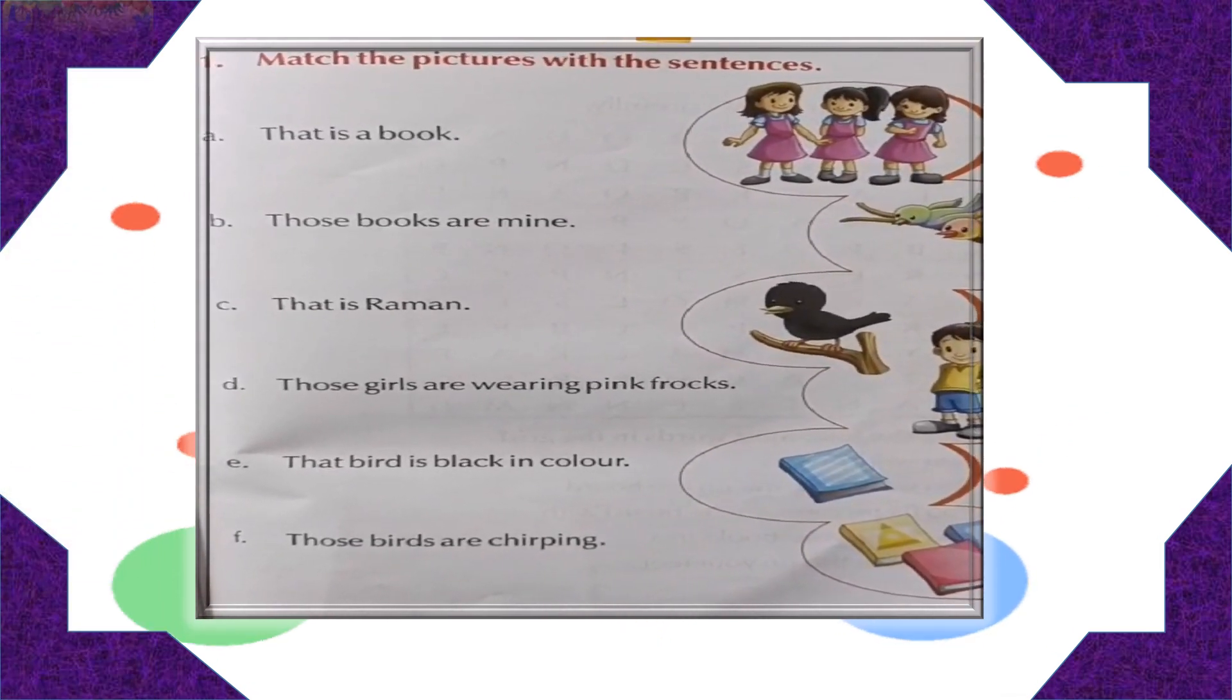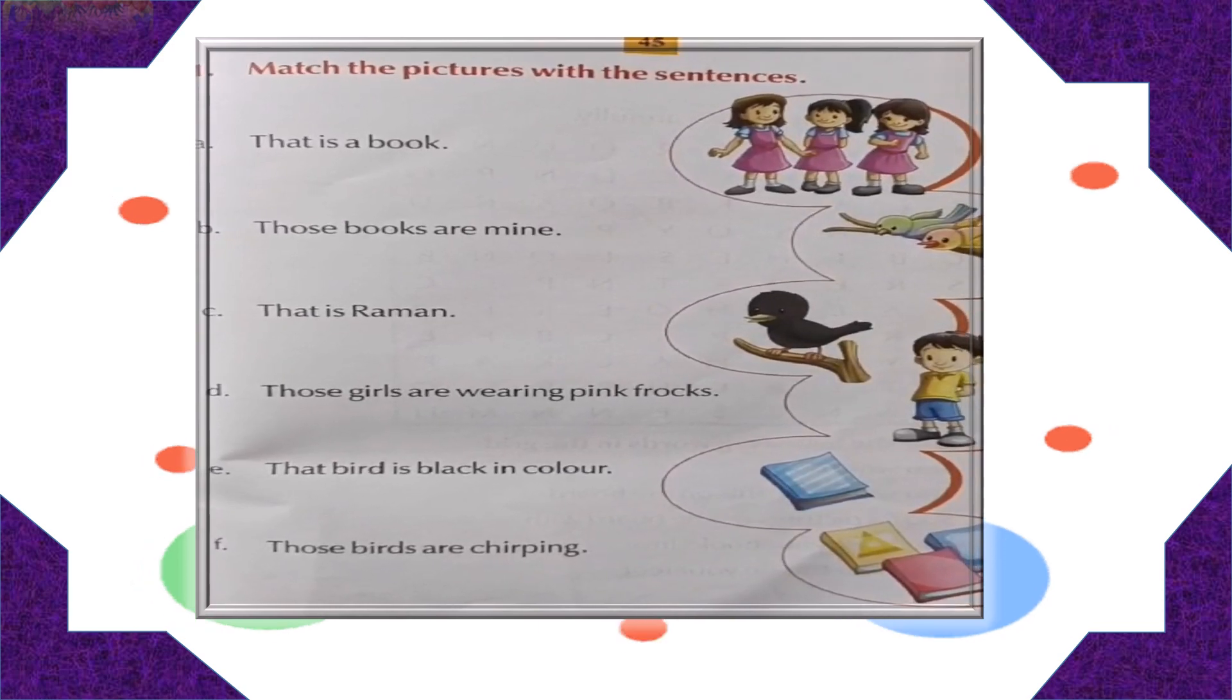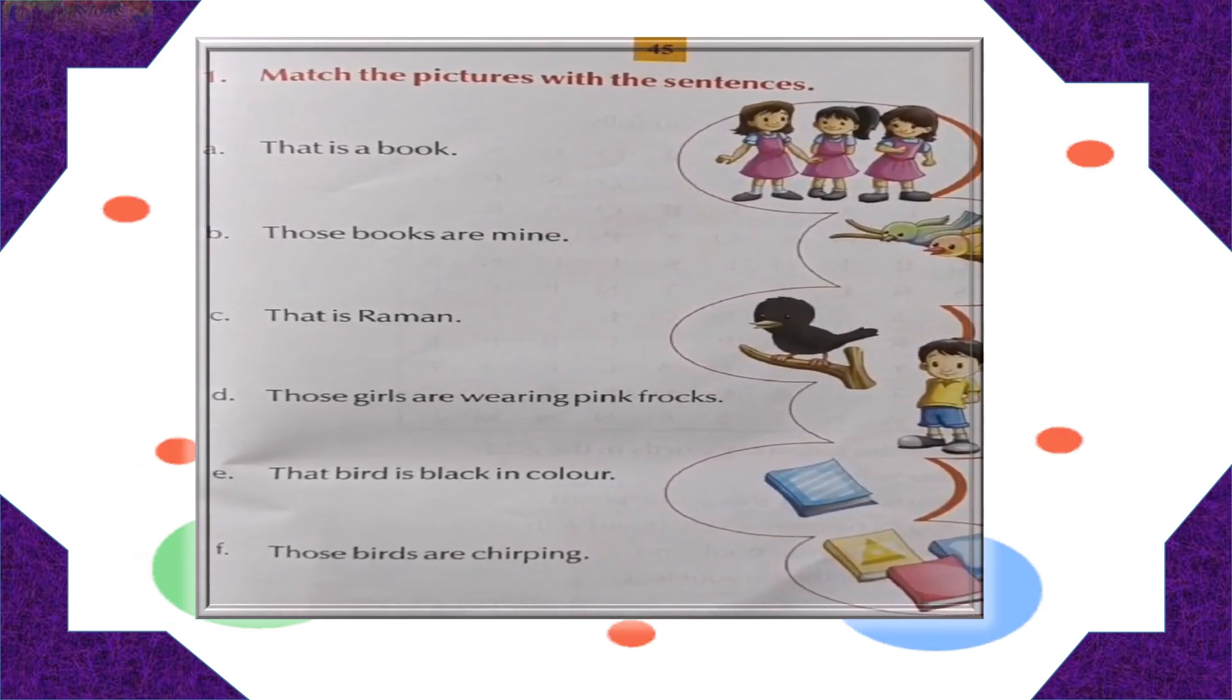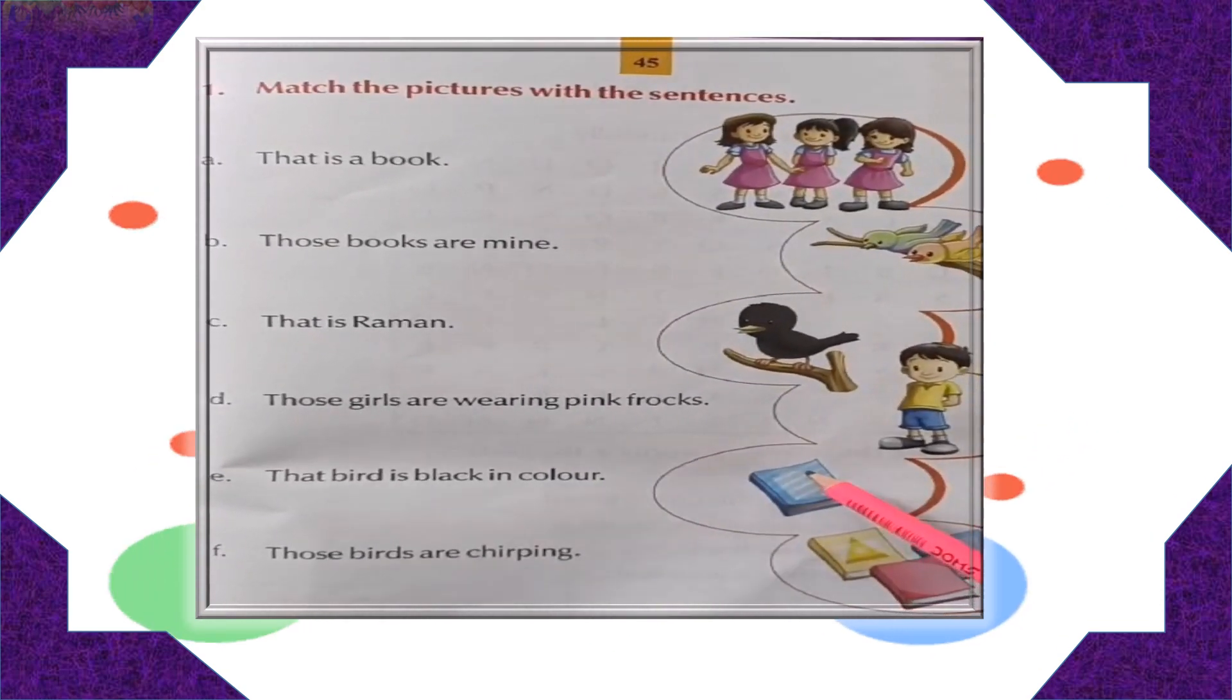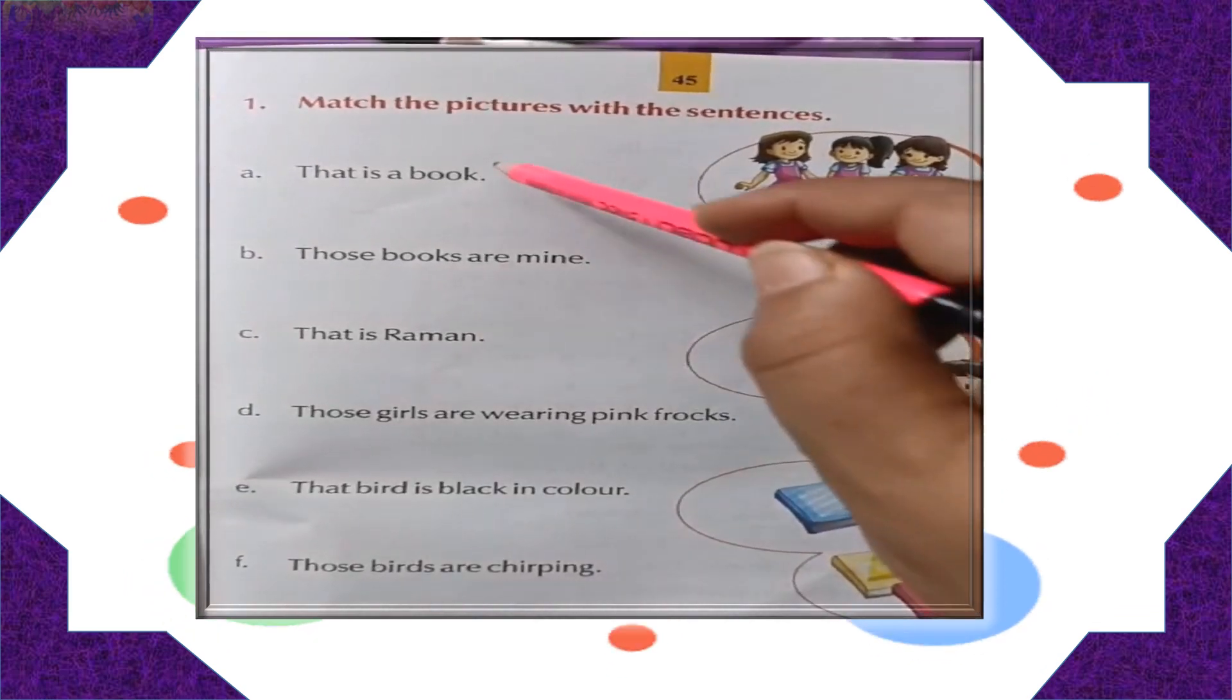Match the picture with the sentences. Let's do this exercise. That is a book. Now, find the book where it is. Here is the book. Let's quickly match it.